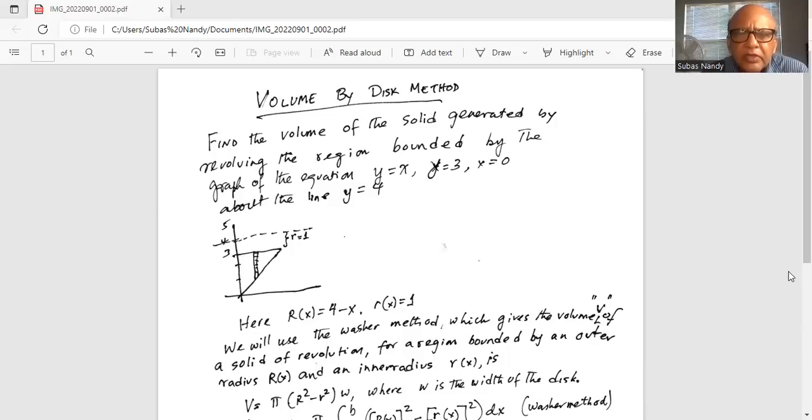Find the volume of the solid generated by revolving the region bounded by the graph of the equation y equal to x, y equal to 3, x is equal to 0 about the line y equal to 4.